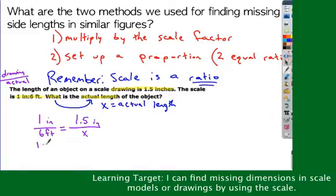Now that I have my proportion, all I have to do is cross multiply. So one times X equals six times 1.5. So X equals nine. Now look for your units here. Notice that's inches to feet. So feet are going to be on bottom.